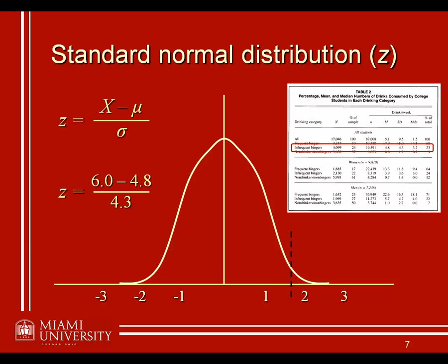If we start out with the number of drinks of 6, let's say somebody drinks 6 drinks in a given week. Well then it's very easy to calculate the z-score. We take 6 minus that mean of 4.8 divided by that standard deviation of 4.3, and we end up with the z-score of about 0.3, 0.28 in fact. That's indicated by the blue arrow here.